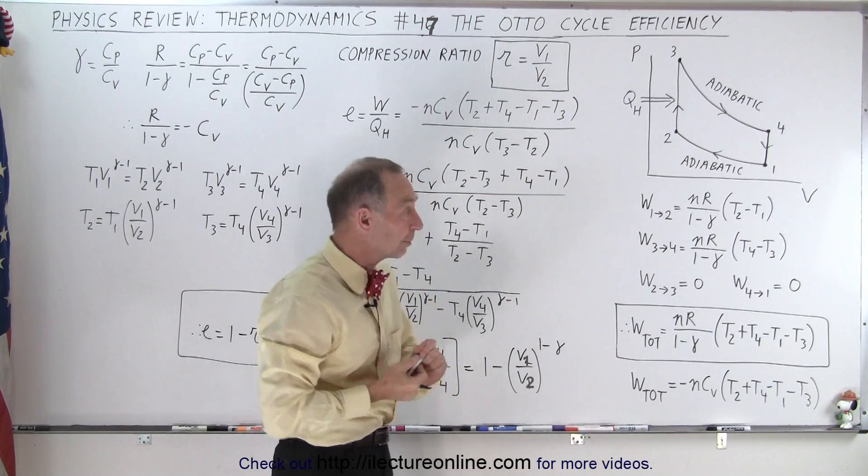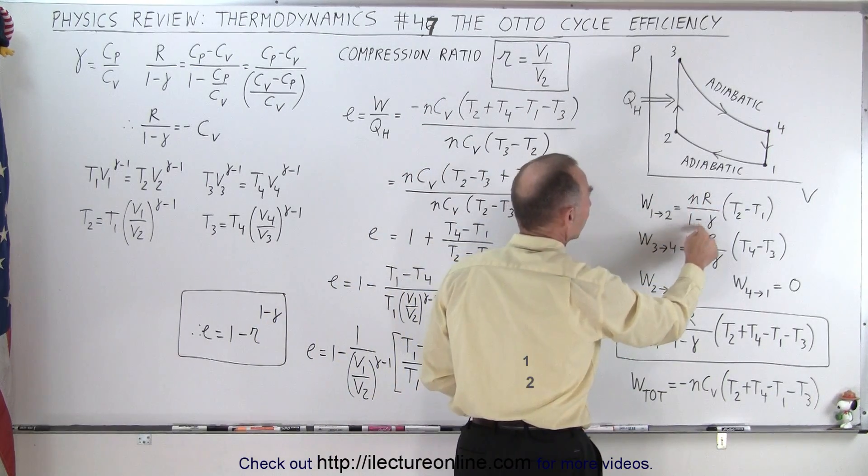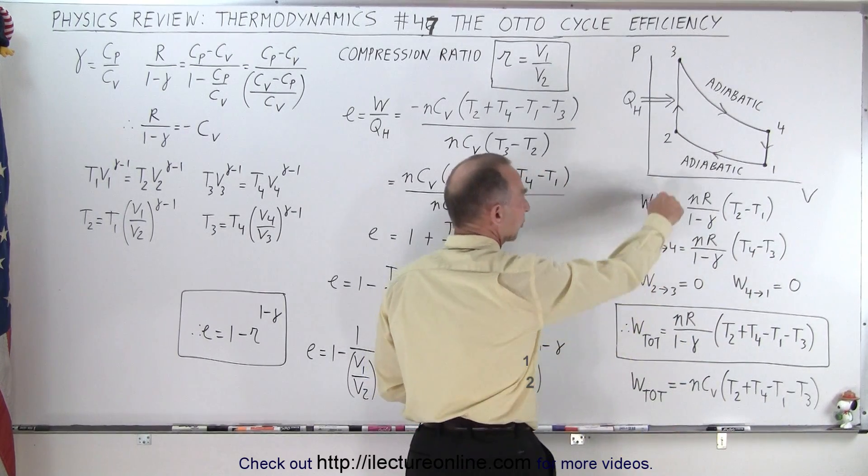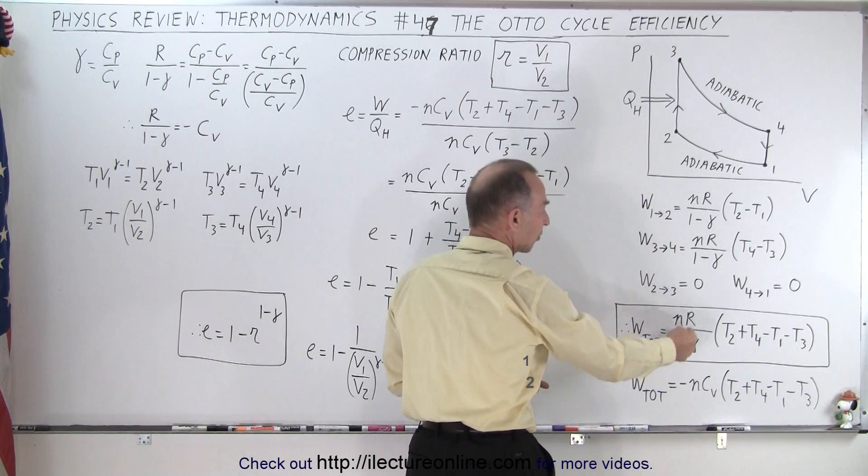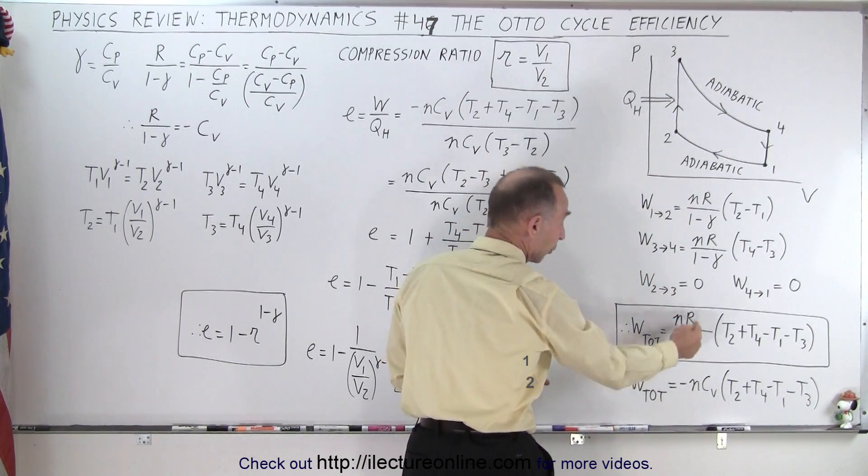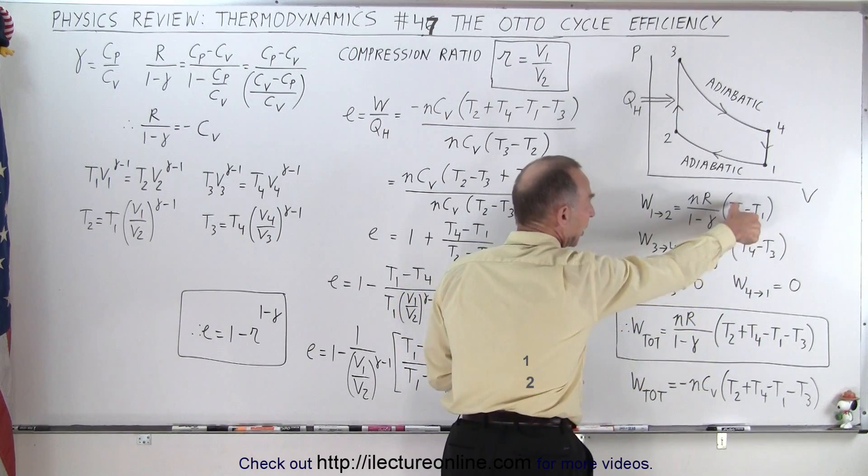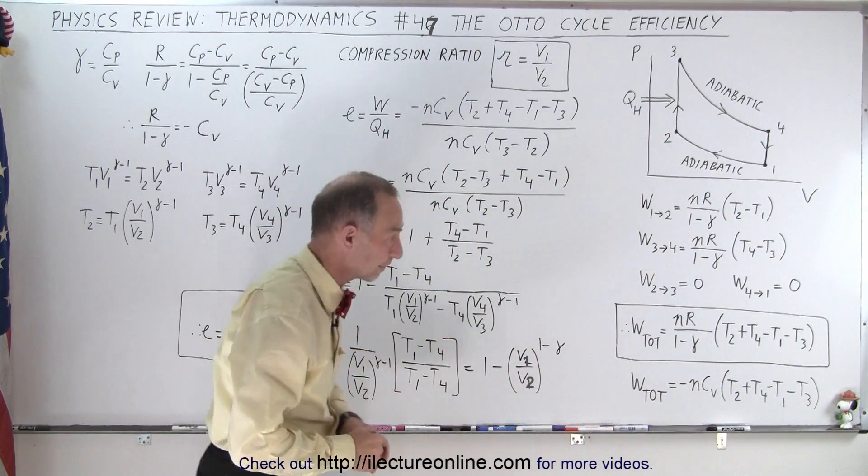Now we have the work done by each of the two adiabatic processes, which is nR over 1 minus gamma times the difference in the final minus the initial temperature. We have that for the two processes, so the total work done is the sum of the two, which ends up being nR times 1 minus gamma over 1 minus gamma times T2 plus T4 minus T1 minus T3.